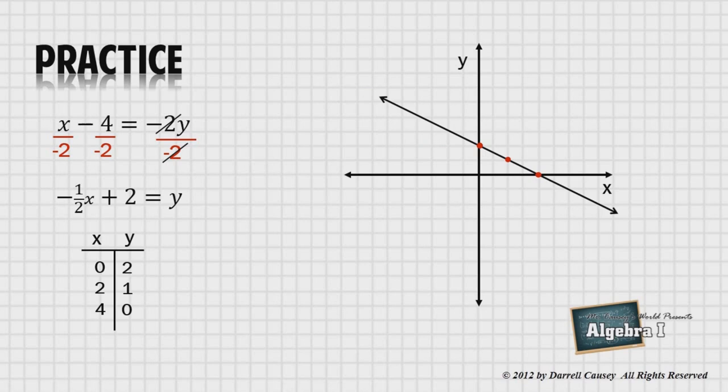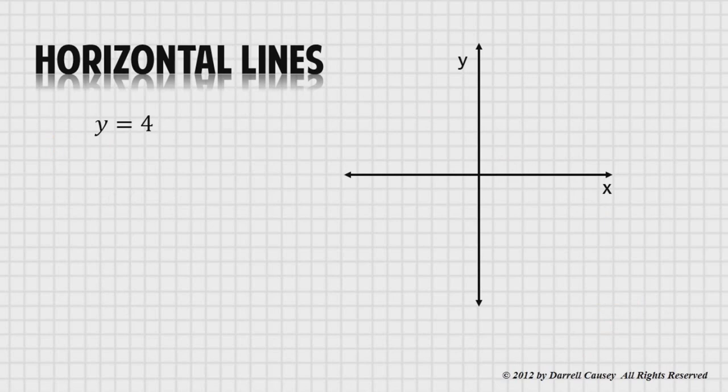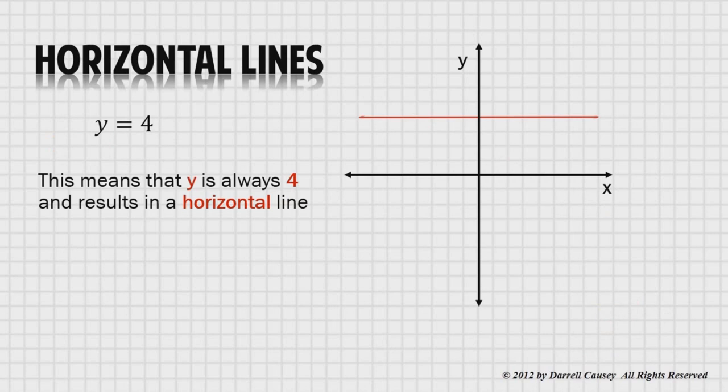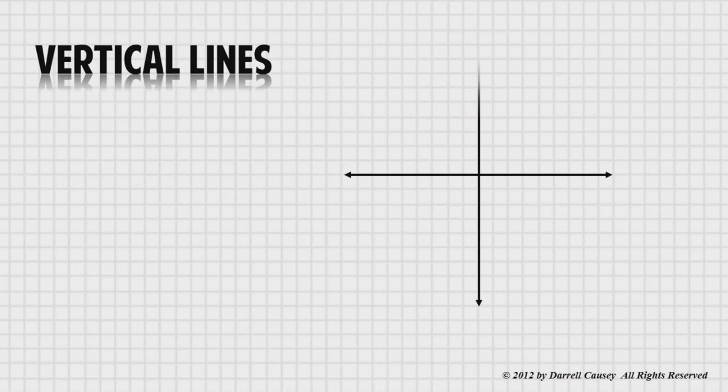Before we stop, let's discuss two more things, horizontal and vertical lines. When we write y equals 4, it means y is always 4 and results in a horizontal line. And when we write x equals negative 2, it means that x is always negative 2 and results in a vertical line.